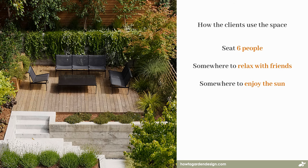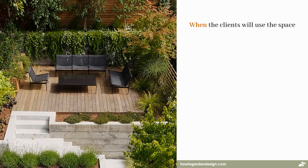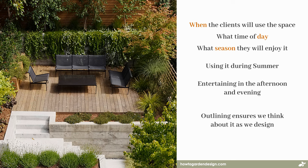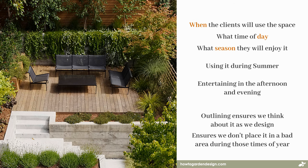Before we get to shaping, we also want to think about when the clients are most likely to use this space. This doesn't mean when they're available, but what time of day and what season they're most likely to enjoy it. It doesn't mean they can't use it at other points, but having a target time of when you want to enjoy the space at its best will help us position it properly. Our clients might suggest something as simple as using the area mainly in summer, and most likely entertaining in the afternoon and evening. Explicitly outlining these as part of our criteria ensures we don't place our entertaining space in an area that is less enjoyable at these particular times of day and year.